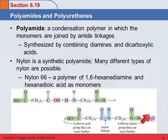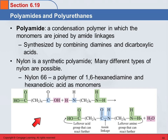Now we have an amine group on this end that could react with another carboxylic acid, and a carboxylic acid group on this end that could react with another amine. That's how you get the polyamide — the polymer that just keeps going and going.